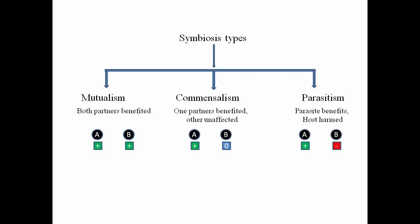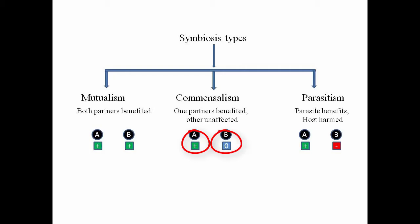We will be studying their types as well. The three major types of symbiosis are mutualism, commensalism, and parasitism. In mutualism, both of the partners are benefited — as you can see in the example, both A and B are being benefited. Under commensalism, one partner is benefited whereas the other remains unaffected — neither harmed nor benefited. Whereas in parasitism, one is benefited and is called the parasite, whereas the other is harmed, called the host.